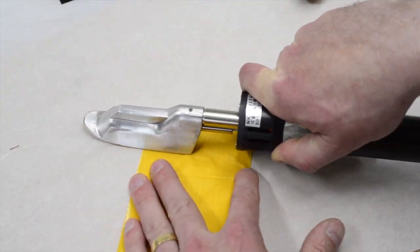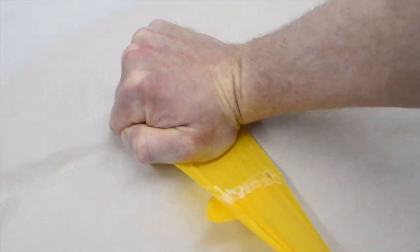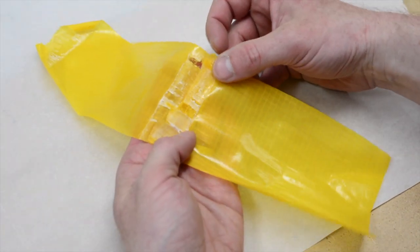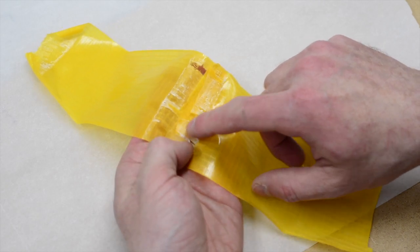If we iron two of the ultralight tube pieces together, when we pull them apart it should look like this with the TPU coming off in patches from both sides.